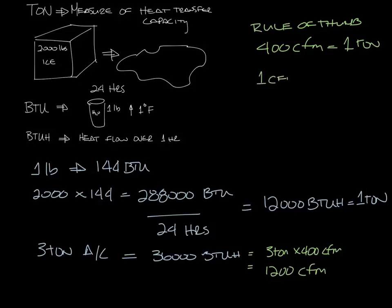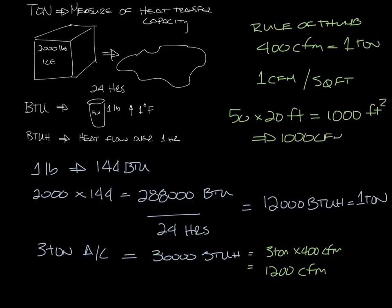Another rule of thumb is that you have about 1 CFM per square foot. So you can use this if you know the size of a space. So maybe you have a space that's like 50 foot by 20 foot. So 50 times 20 is a thousand square feet. So now you take your thousand CFM, because it's 1 CFM per square foot, divide that by your 400 CFM a ton, and that comes out to about a two and a half ton unit. And if you multiply that by 12,000 BTU a ton, you'd get 30,000 BTU.